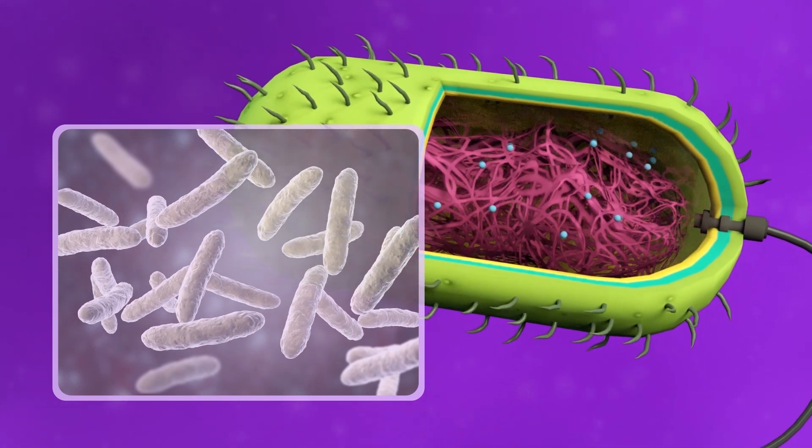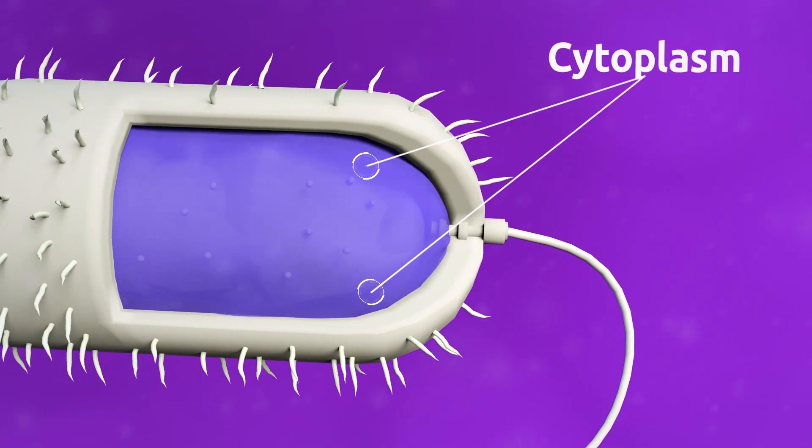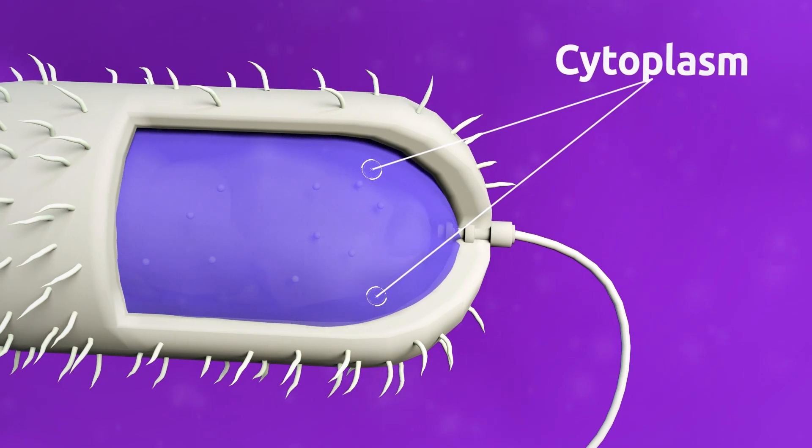Bacteria are prokaryotic cells. The cytoplasm is a thick solution found inside the membrane. Organelles are located in the cytoplasm.